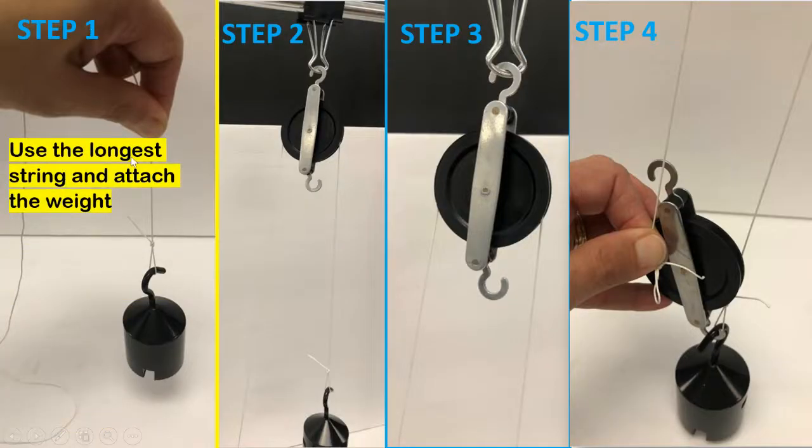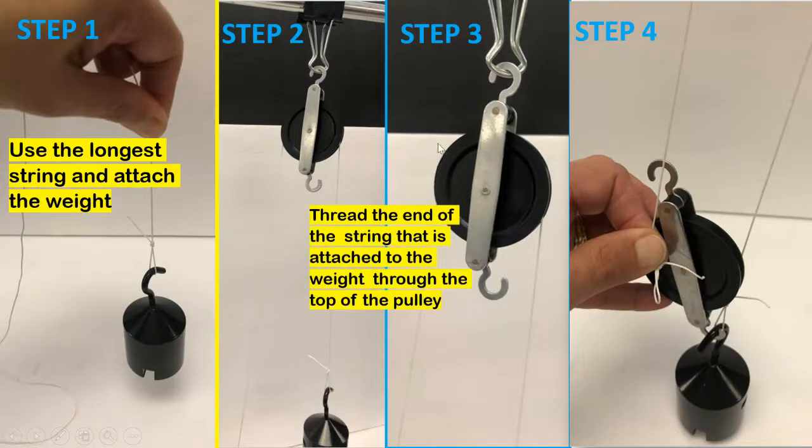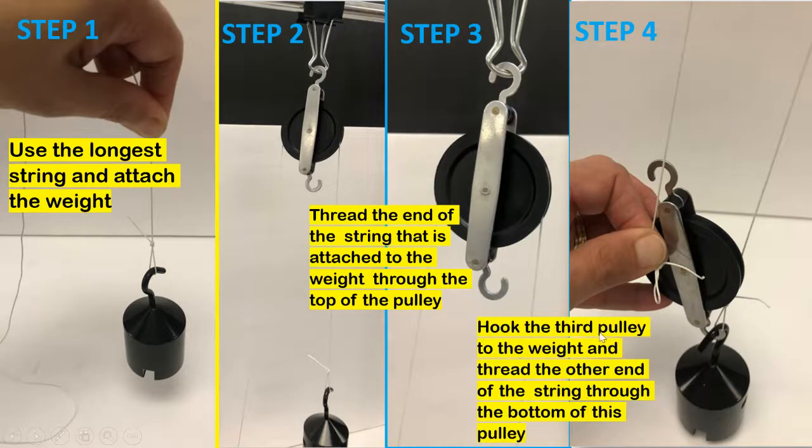Step one: use the longest string and attach the weight. Steps two and three: thread the end of the string that is attached to the weight through the top of the pulley. Step four: hook the third pulley to the weight and thread the other end of the string through the bottom of this pulley.